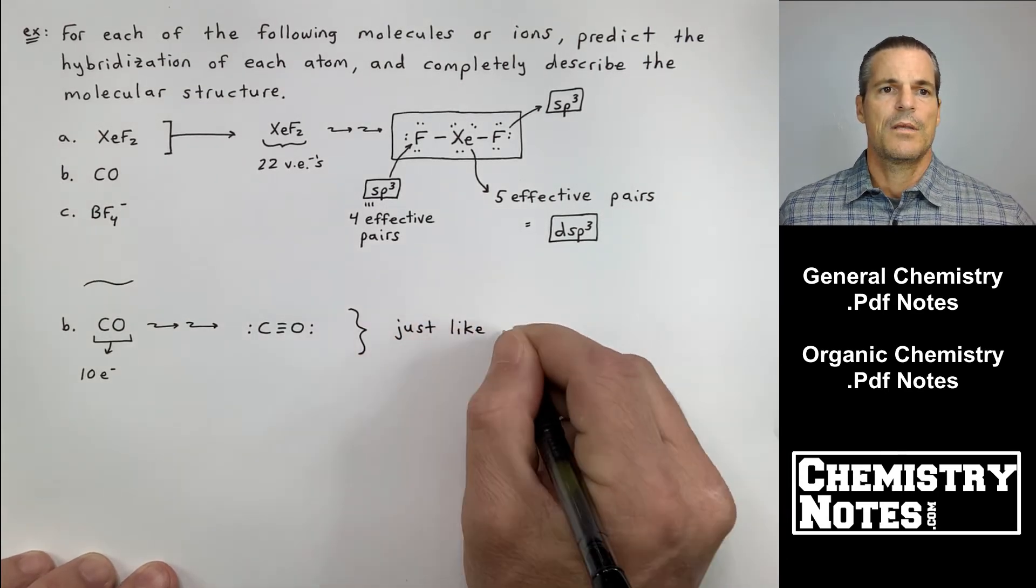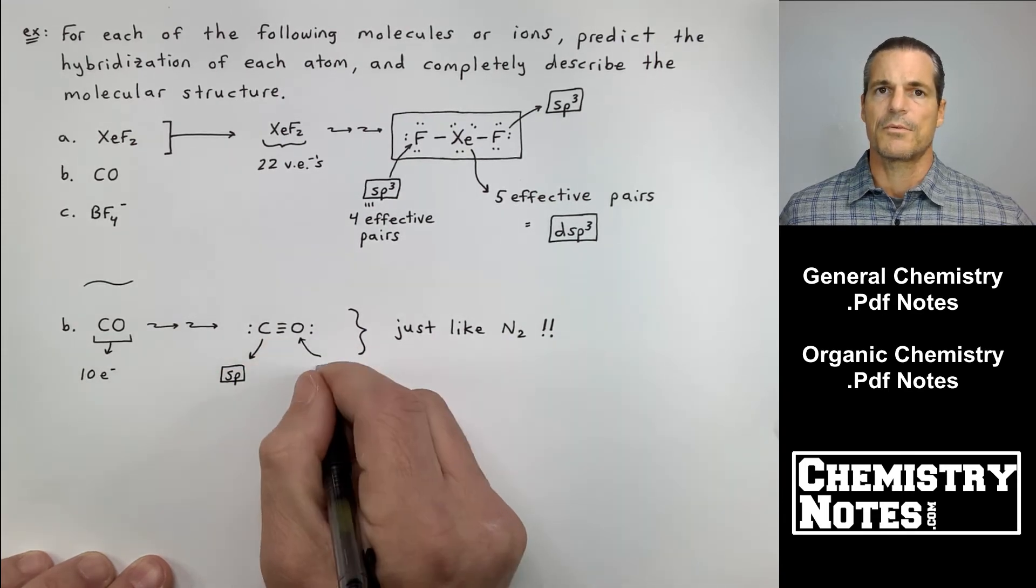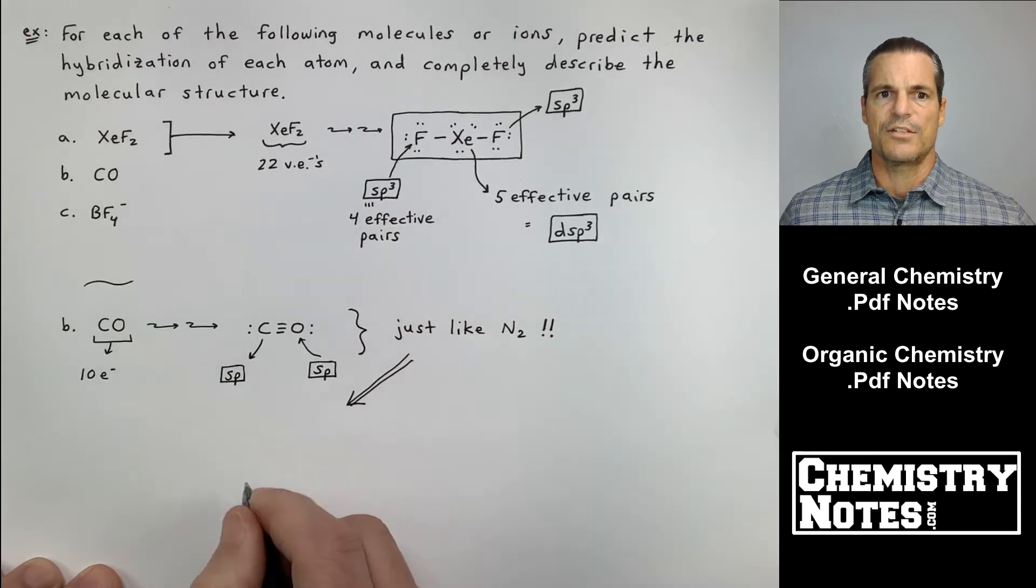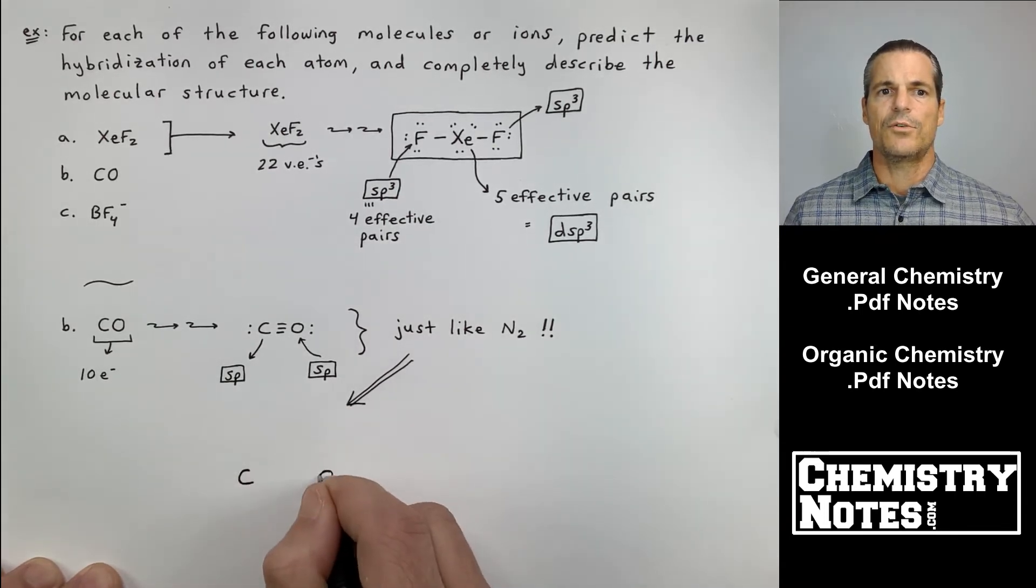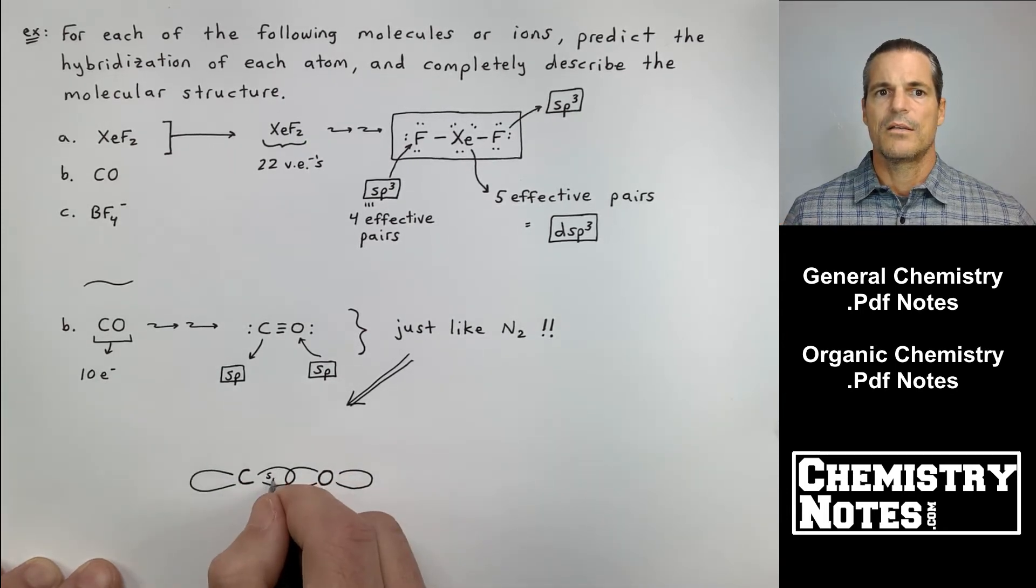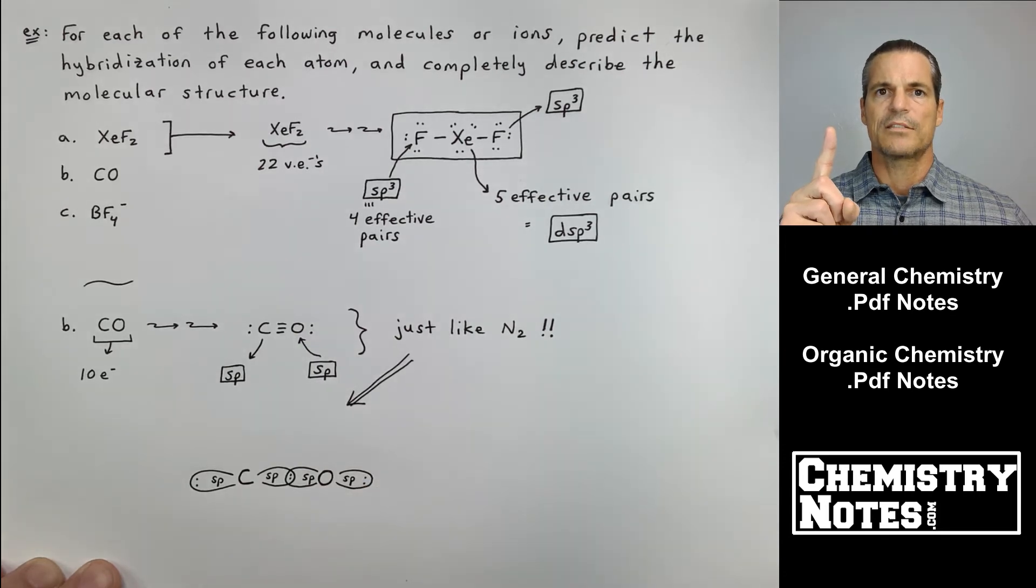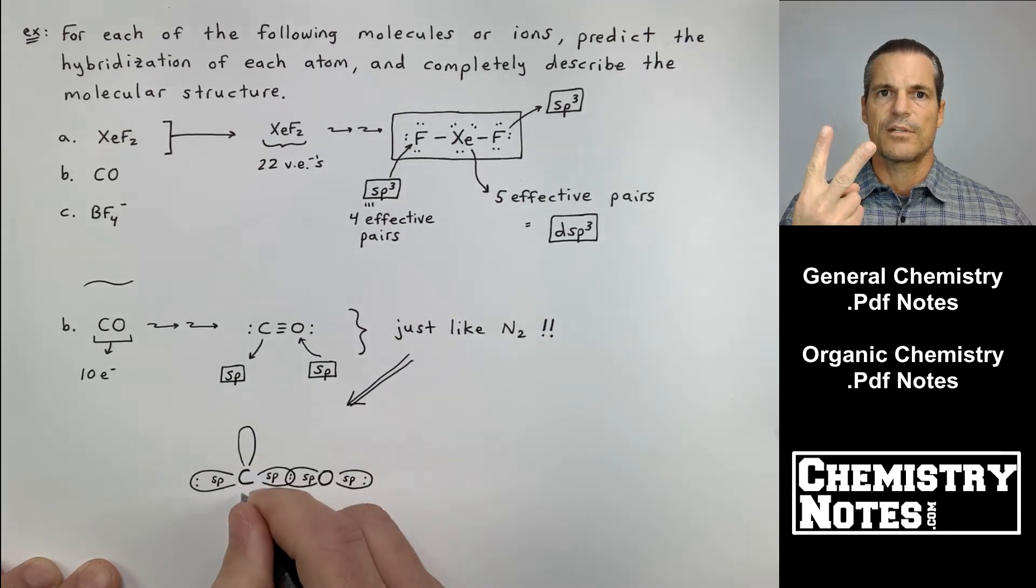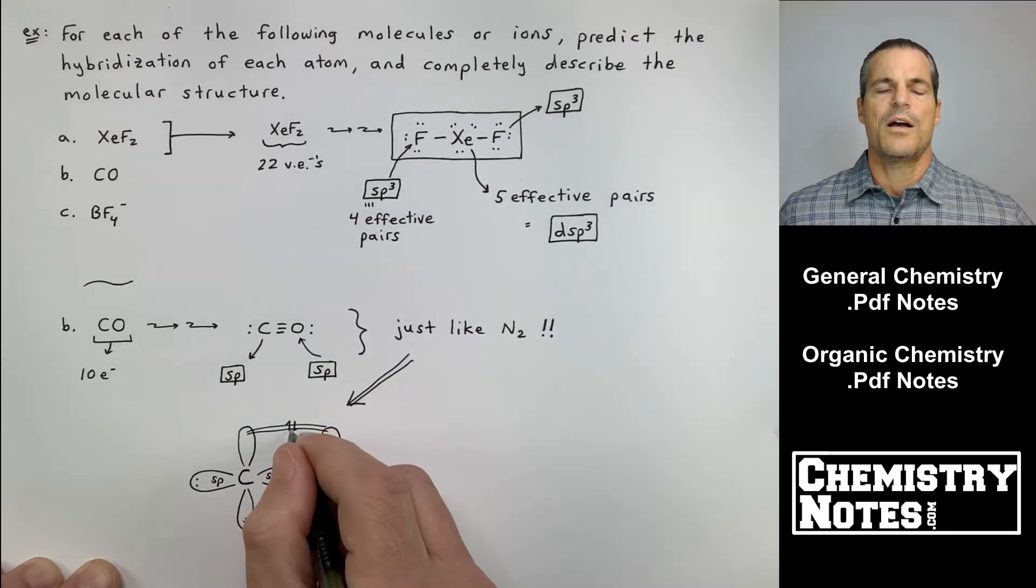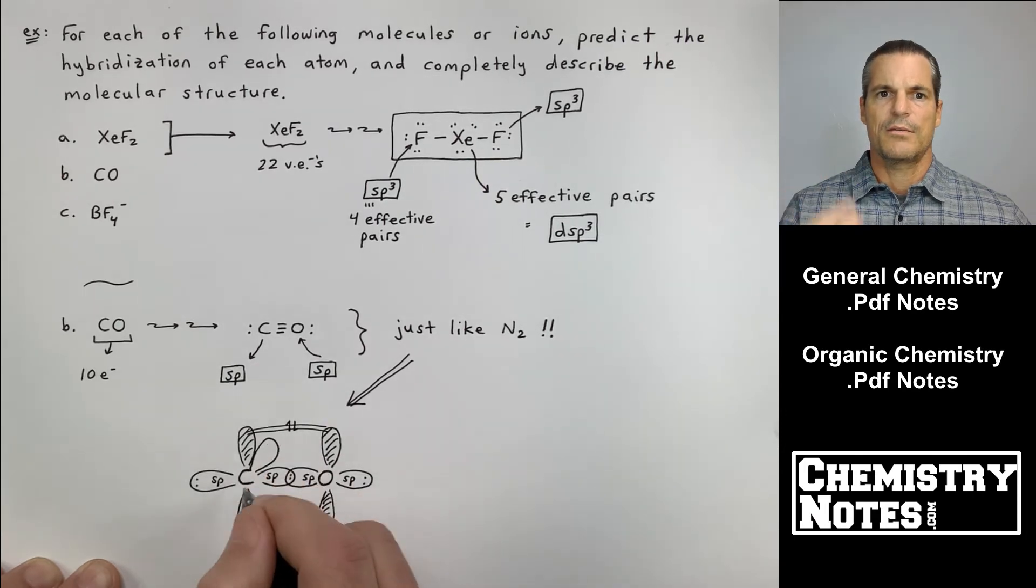B is carbon monoxide, CO. If you go through the process of writing its Lewis structure properly, you end up with carbon triple bond oxygen. So carbon has two effective pairs around it. It's going to be SP. Carbon has the lone pair, one, and the triple bond oxygen, a second effective connection. So it's going to be S, P. And then the oxygen is the exact same. Two effective pairs around it, S, P. So CO is just like N2, right?